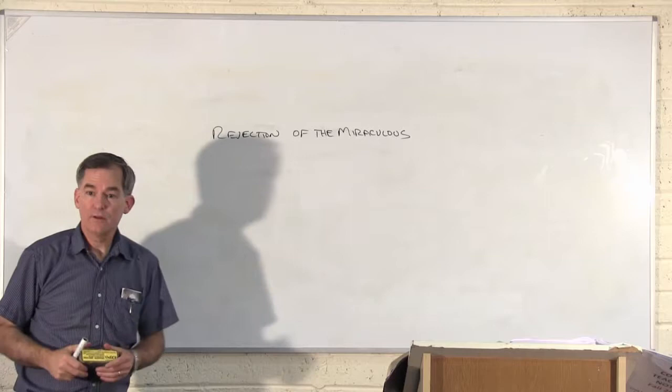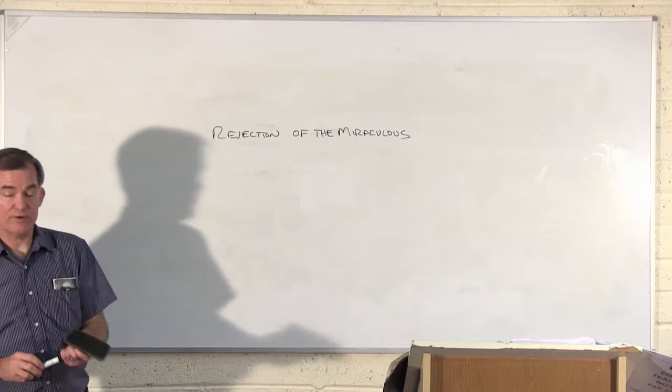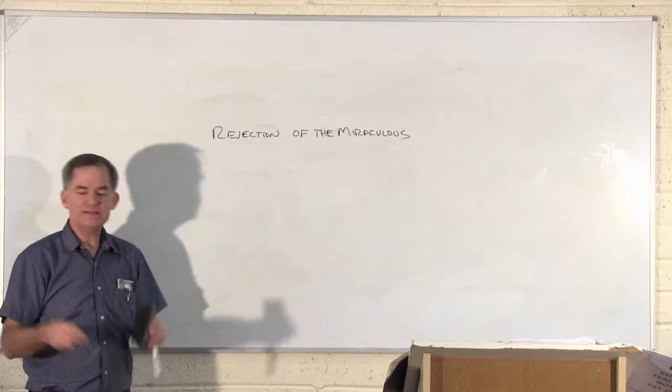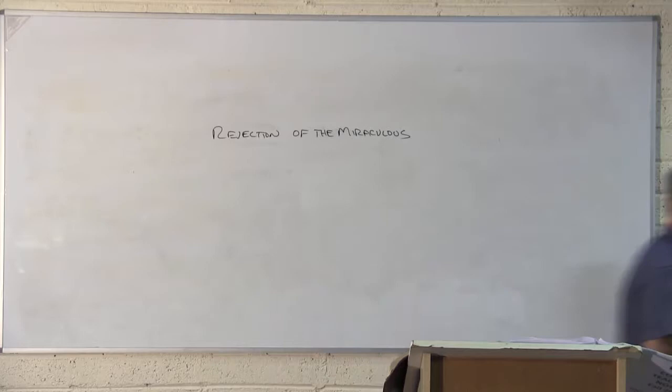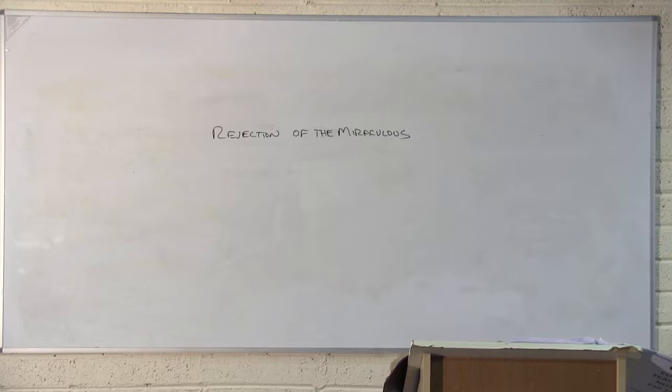Now, why do people have a problem with miracles? We don't pray for them. But why do people have a problem with miracles in the Bible? There's a president of the United States, a second president of the United States. His name was Thomas Jefferson. He edited the King James Bible. He cut out all the things that he believed in and left the rest of it with holes. And he only told the story of Jesus with no miracles. So, why would people be afraid of miracles?